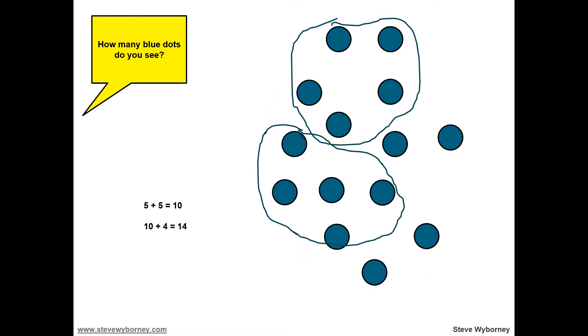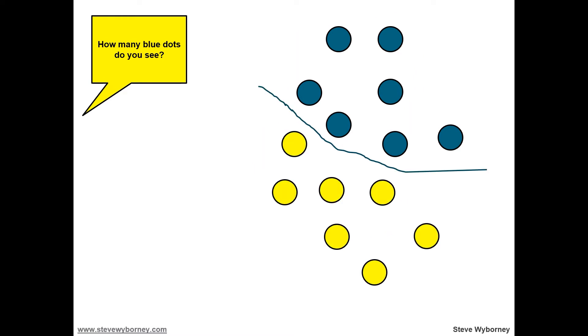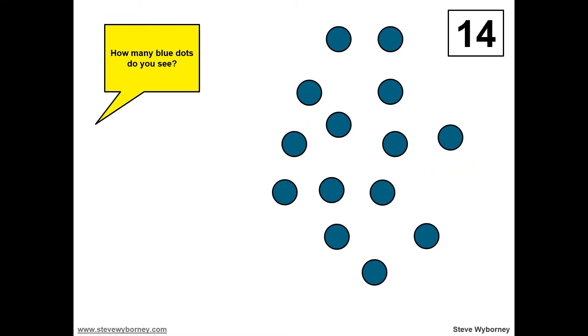Did you see the different groups in groups of five and then leftovers? Five plus five equals 10, then four more leftovers, so 10 plus four equals 14. Or did you see seven dots and seven dots? There are 14 dots.